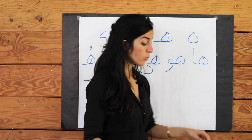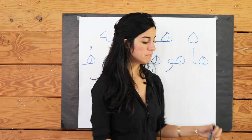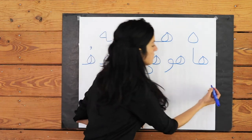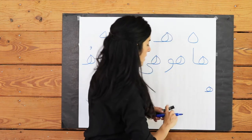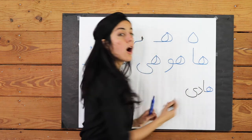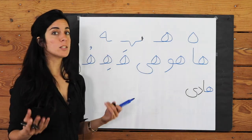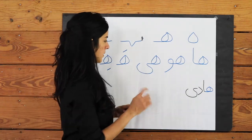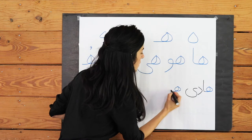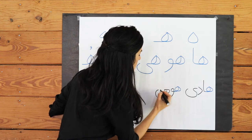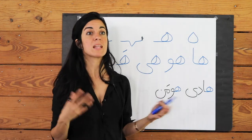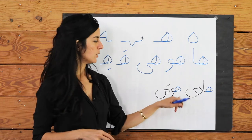Now let's learn a few words using our new H letter combined with our vowels. H with an A: Hadi — that is a name. H with a U: Human — and that is also a name, a man's name. So Hadi and Human are both men's names.